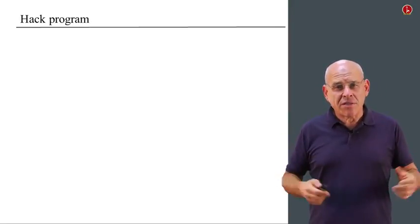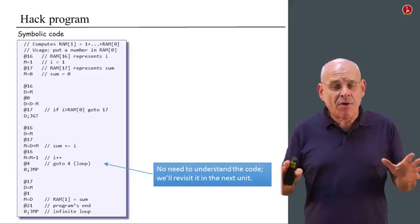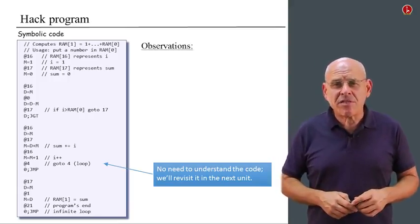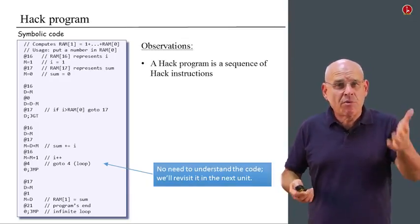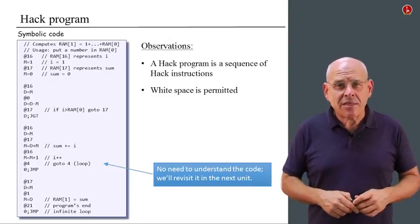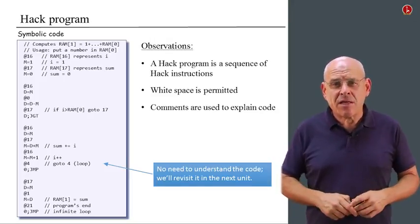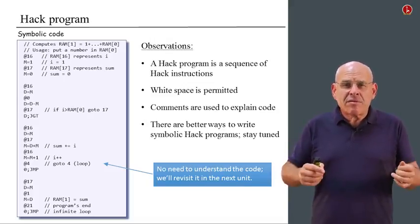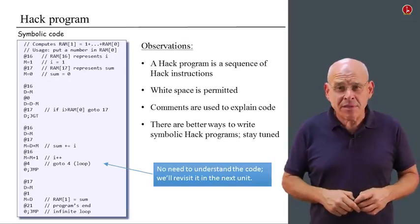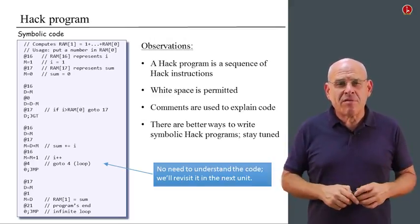Now that we understand how the specific instructions look like in both binary and symbolic, let's talk about the overall concept of a Hack program. Here's an example of a Hack program. At this level of the course, you don't have to understand the program. We can make some quick observations. A Hack program is a sequence of Hack instructions. This program is written using symbolic instructions. White space is permitted. Comments are welcome and can be used at will. There are better ways to write code with less numbers and more symbols, and this is something we'll do later on in the course.